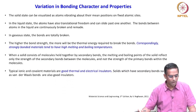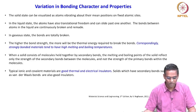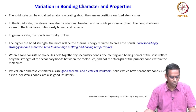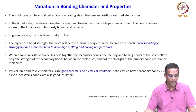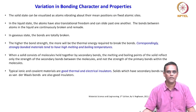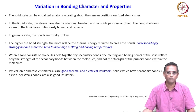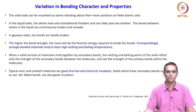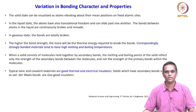Typical ionic and covalent materials are good thermal and electrical insulators. Solids with secondary bonds such as Van der Waals bonds are also good insulators. This is true because most ceramic materials are covalently bonded, ionically bonded, or a mixed combination of these two — like intermetallics and so on.